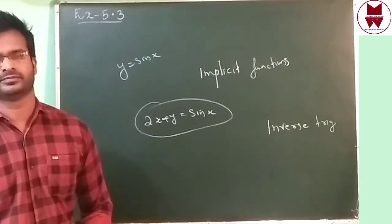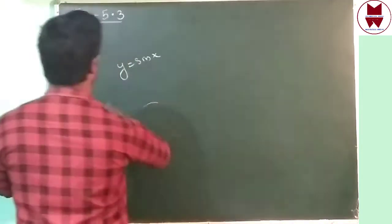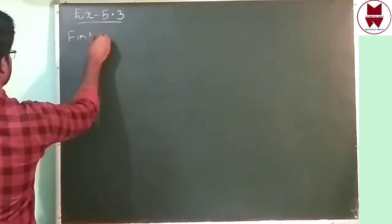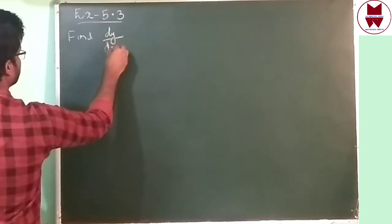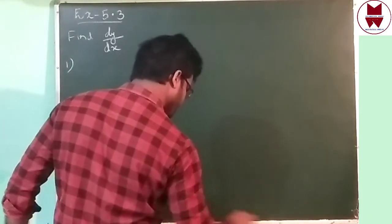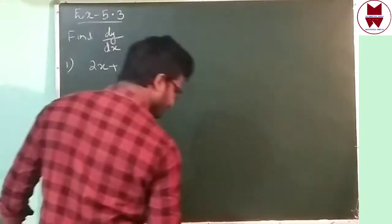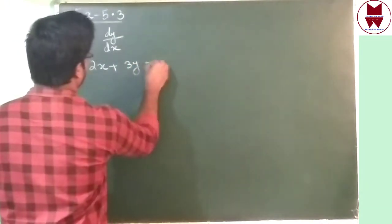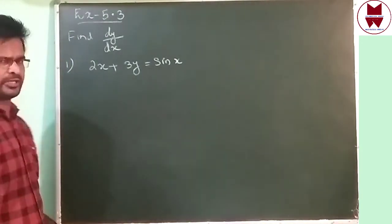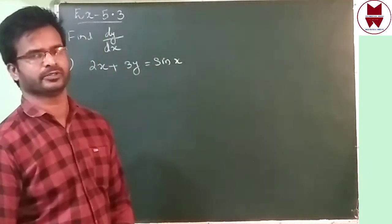First, we can do question number 1. Our question is: find dy/dx. Question number 1 is 2x + 3y = sin x. Before, I told we can make y equal to one function; otherwise, directly we can differentiate with respect to x.